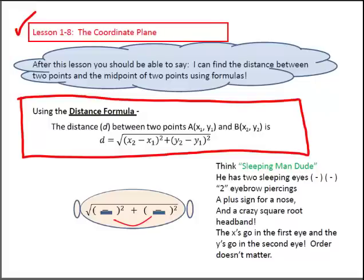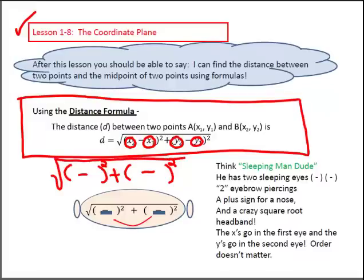What I've done is I've come up with my own special trick to help me remember the distance formula, and I call it the sleeping man dude. Why do I call it the sleeping man dude? Because, basically, I remove these variables out of the formula, and it looks like what I call the sleeping man. So, I have his two eyes, and they're sleeping. He has a nose, which is a plus sign between them. He's got two eyebrow piercings, literally a two, and he has a crazy headband. And this is called the sleeping man dude. I'm going to show you how I use the sleeping man dude in my next two examples.